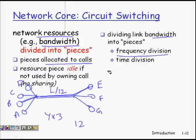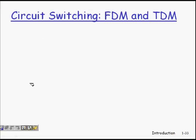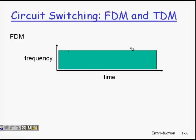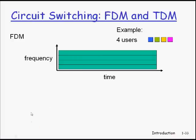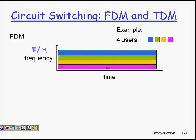Bandwidth can be divided using Frequency Division Multiplexing (FDM) or Time Division Multiplexing (TDM). In FDM, the whole frequency band is divided among four users, so each gets R/4 of the frequency. Each user has a dedicated frequency slice. If a user is not using their slice, it remains idle and unutilized — but whenever they do use it, they get perfect quality of service.